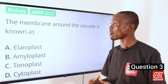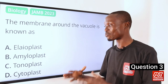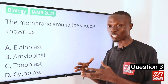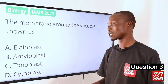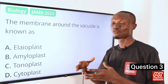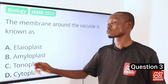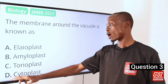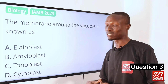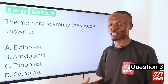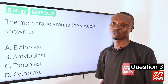Tonoplast is the membrane around the vacuole. The tonoplast actually separates the content of the vacuole from the cell, and it is also known as the vacuolar membrane. Option D, cytoplast, refers to a cell from which the nucleus has been removed. So the answer to this question is option C, tonoplast.